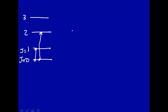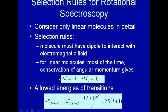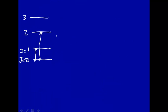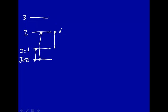The selection rule is that ΔJ has to be plus or minus 1, and ΔmJ has to be 0 or plus or minus 1. In other words, you can only go from one adjacent level to the next — for example, from here to here or here to here. You cannot change more than one J unit, so jumping two levels is not allowed by the selection rules.